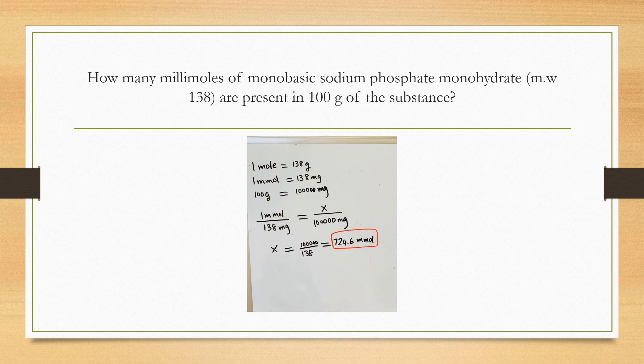So they're asking, how many millimoles are present in 100 grams of the substance? You can solve this using ratio and proportion. If you know one millimole is 138 milligrams, then you convert the 100 grams to milligrams. That'll give you 100,000 milligrams. So that's X. And then you find X: X equals 1 times 100,000 divided by 138. Your answer is 724.6 millimoles.